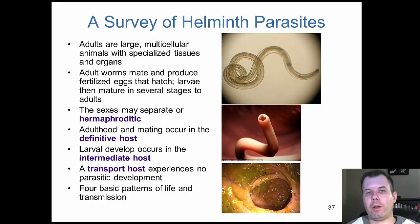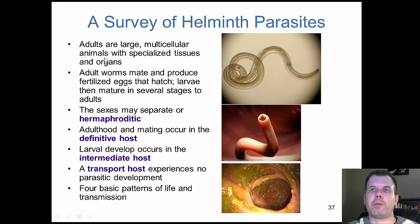Now let's transition to the worms. The worms are animals — part of the animal kingdom — very much like us. Many have developed digestive systems, reproductive systems, and a good sense of their environment. Adult worms mate and produce fertilized eggs. We'll look at the different ways these organisms can get into the body in the next section.